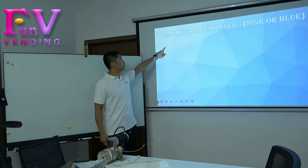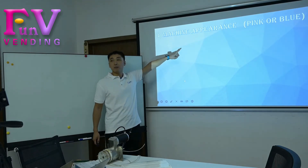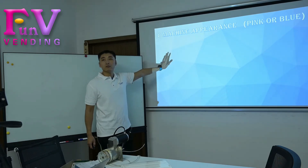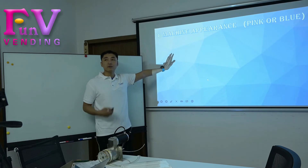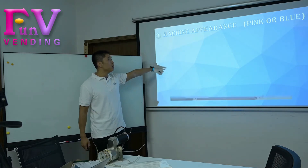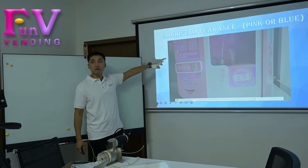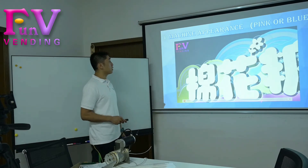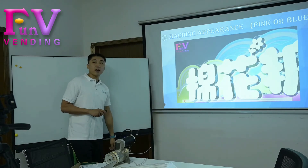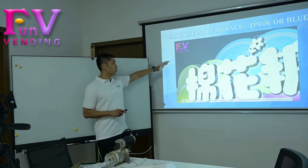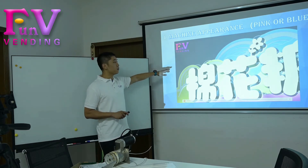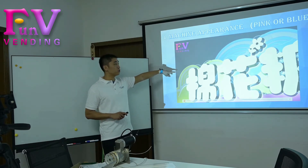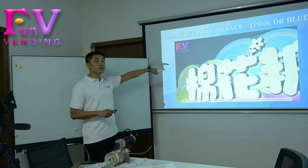First, we are going to check about the appearance of this candy cotton machine, because as one of the machines, the outlook is very important for the customer. You can see this is our candy cotton machine. This is an LED that works on the top, and this is like a logo. Some of the customers would like to set their own logo, so we can change the logo on the top. This is for the Chinese market.